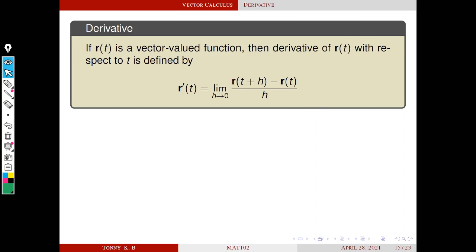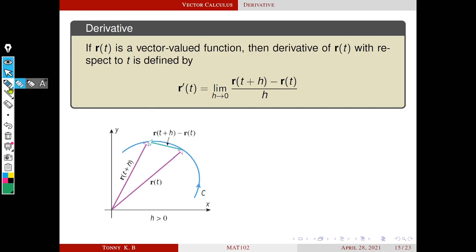We are going to analyze this definition geometrically. In this definition, r(t+h) and r(t) are both vectors, so it is clear that their difference is also a vector. Here we assume that this is the orientation of the curve C — orientation means increasing order of the parameter.